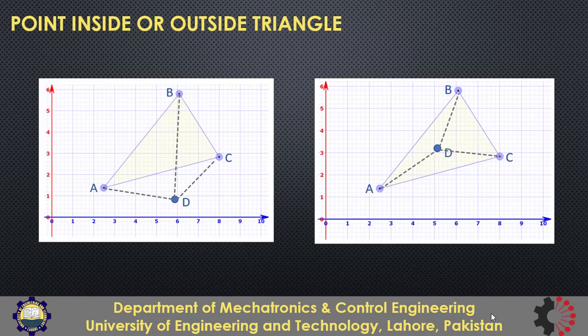If you do the same thing when D is outside — adding the areas of triangles ABD, BCD, and ADC — you can see that the sum will be greater than the area of the major triangle ABC. So that can be the deciding criterion for whether a point is inside or outside the triangle. Note that for this approach you have to find the areas of four triangles — the major triangle and three sub-triangles — all calculated from vertices. Just consider how lengthy those calculations would be without user-defined functions, which shows how helpful they can be.